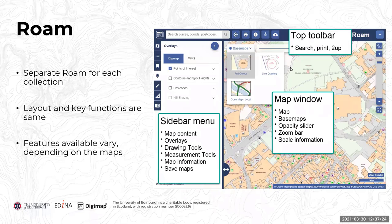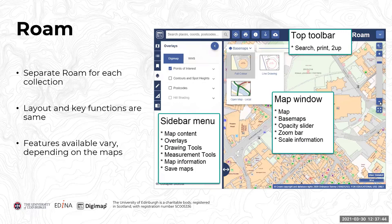Other features in the map window include an opacity slider to fade the colour of the map, and a zoom bar to zoom in and out using plus and minus buttons — or you can use mouse or touch gestures depending on your device. There's also a scale indicator at the bottom right.